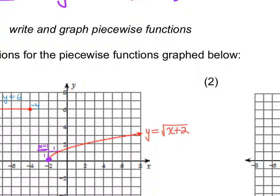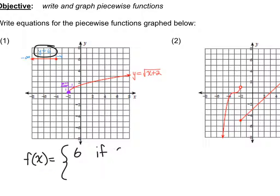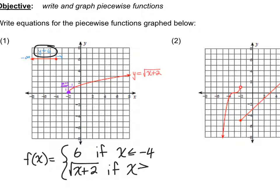So when I'm defining my piecewise, f(x) — the first piece is the linear function 6, we just say 6 not y equals — if x is less than or equal to negative 4. Then the second piece: the square root of (x plus 2), if x is greater than or equal to negative 2.